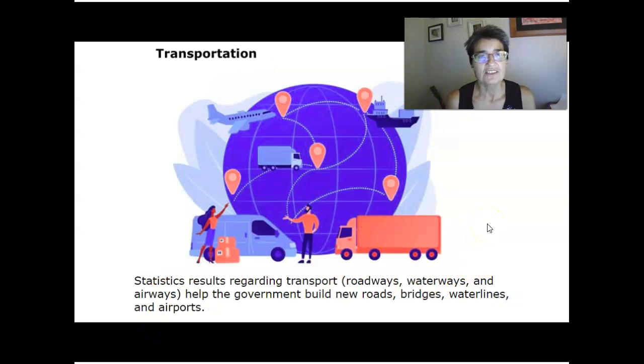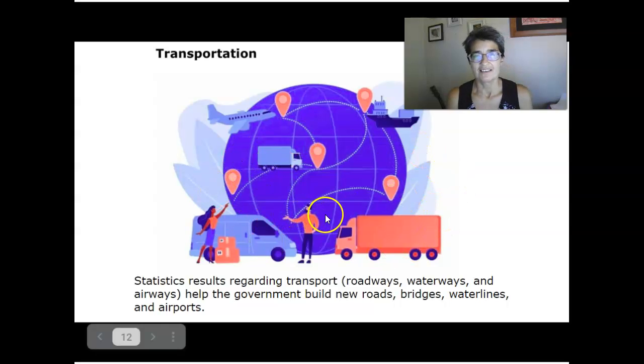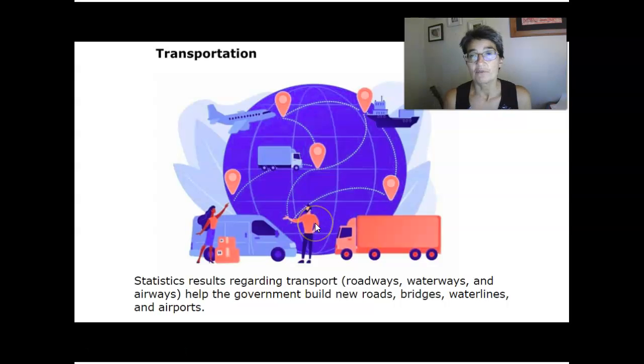Transportation uses statistics. Things like looking at roadways and waterways and airways help governments build new roads, bridges, water lines, and airports to serve the people and the needs of a community.